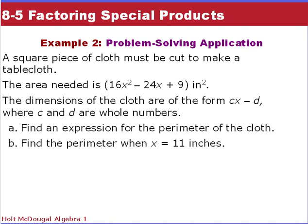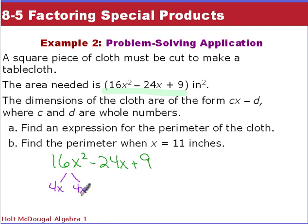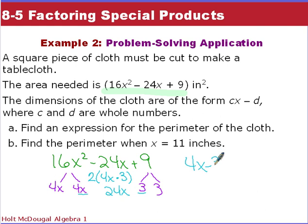Now let's look at a word problem: we have a square piece of cloth that must be cut into a tablecloth. The area is given by 16x² − 24x + 9. The dimensions are of the form Cx − D, where C and D are whole numbers. Can we factor 16x² − 24x + 9? We check: 16x² factors into 4x and 4x; 9 is 3 and 3. Checking the middle term: twice the product is 24x. So we do have a perfect square trinomial, and it factors into (4x − 3)².